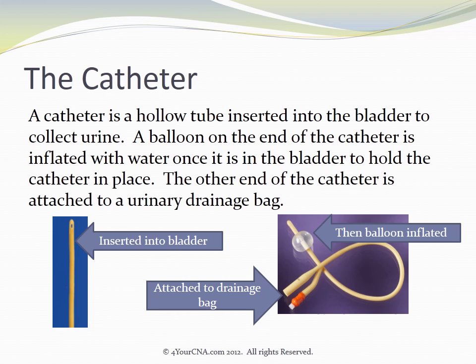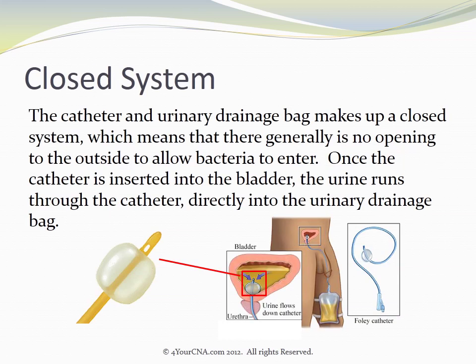A catheter is a hollow tube inserted into the bladder to collect urine. A balloon on the end of the catheter is inflated with water once it is in the bladder to hold the catheter in place. The other end of the catheter is attached to a urinary drainage bag. The catheter and urinary drainage bag make up a closed system, which means that there are generally no openings to the outside to allow bacteria to enter.